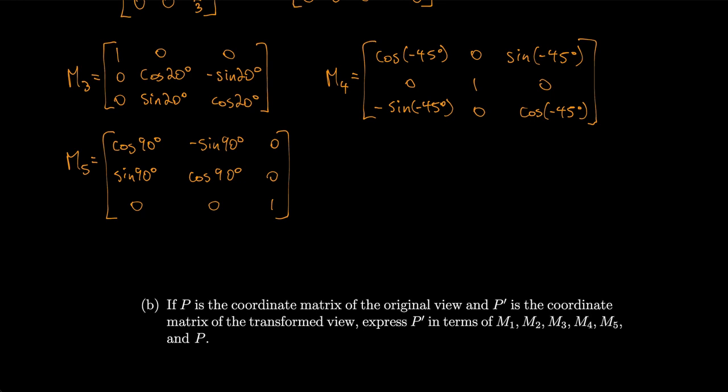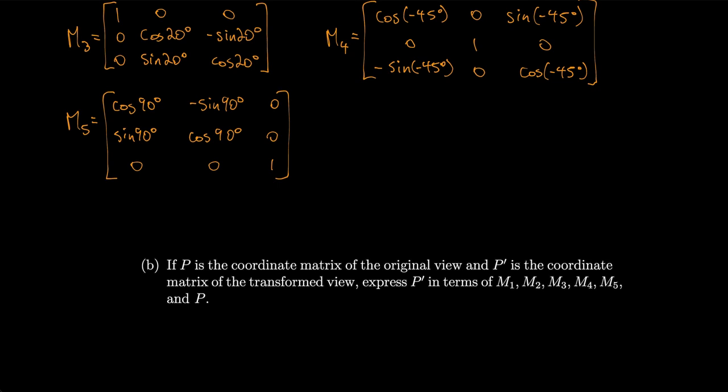If P is the coordinate matrix of the original view and P' is the coordinate matrix of the transformed view, we can express P' in terms of M1 through M5 and P. Simply write P' = M5 is last in its rotation, so it's multiplied by M4, which is multiplied by M3,